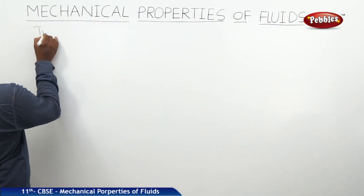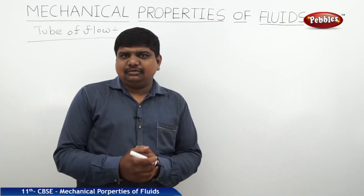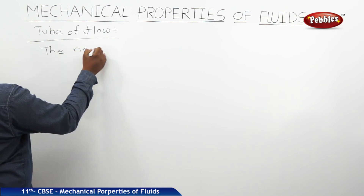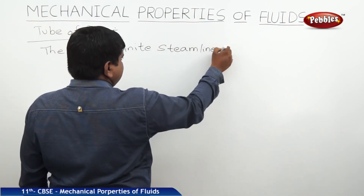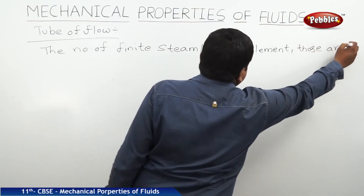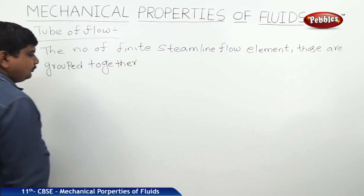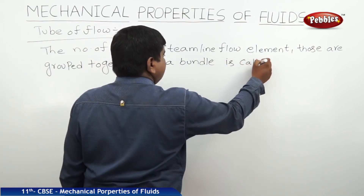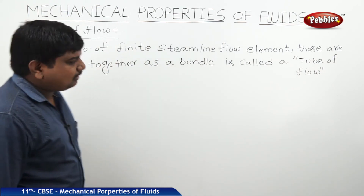The next concept is tube of flow. The number of finite elements of the streamline flows which are grouped together as a bundle is called a tube of flow.